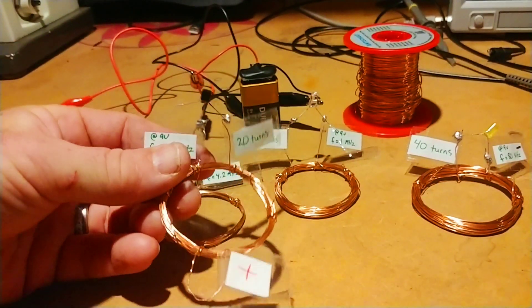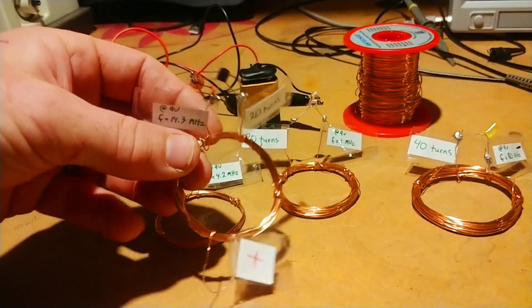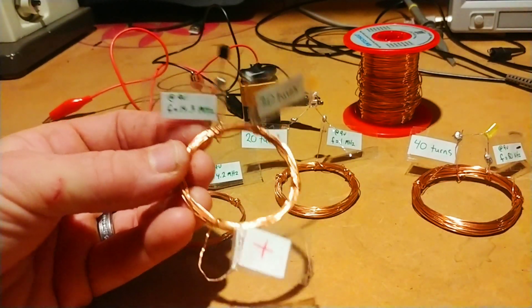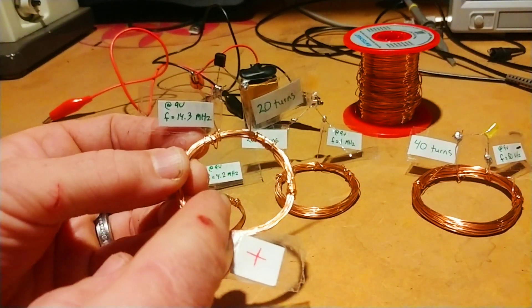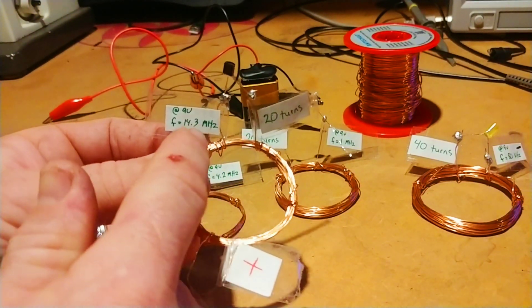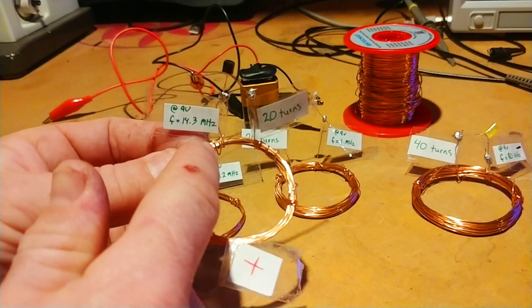What I have here is our transmitter coil. I'm going to show you how to wind all of these. I was able to hook this up to an oscilloscope and find the frequency that it operates. This is a 20-turn coil operating at 14.3 MHz.